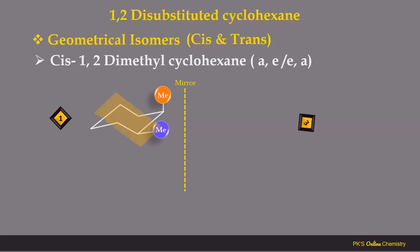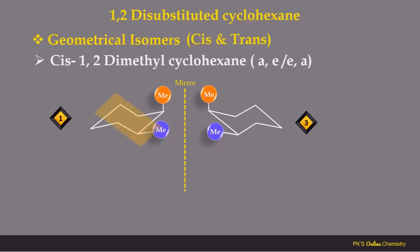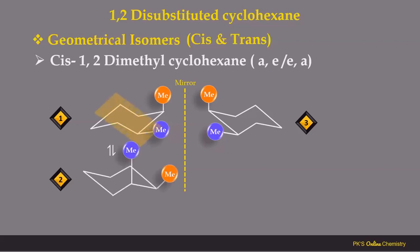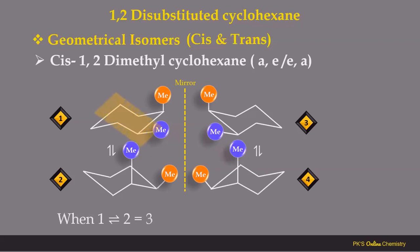We can write the mirror image isomer of conformation number 1 to get conformation number 3. Conformation number 1 and 3 are non-superimposable mirror images of each other — that is, they are enantiomers. We can flip conformation number 1 to convert it into conformation number 2. We can also write the mirror image isomer of conformation number 2, or flip conformation number 3 to get conformation number 4.